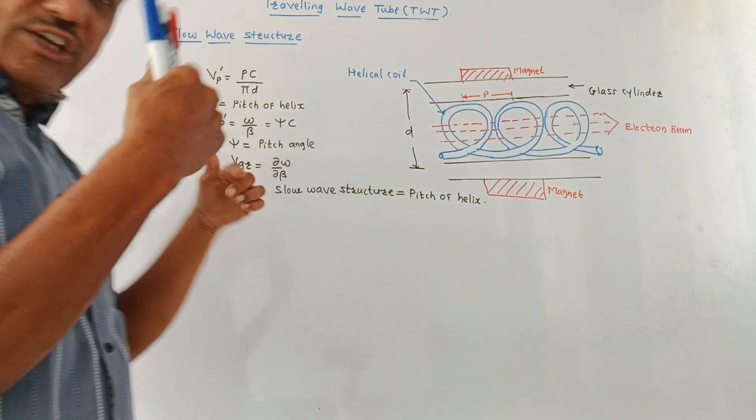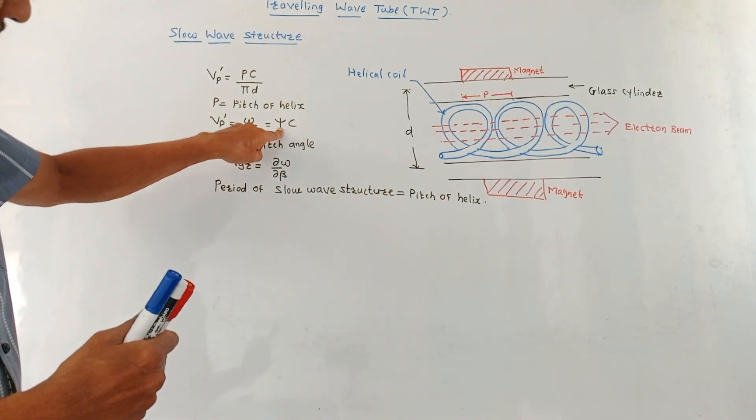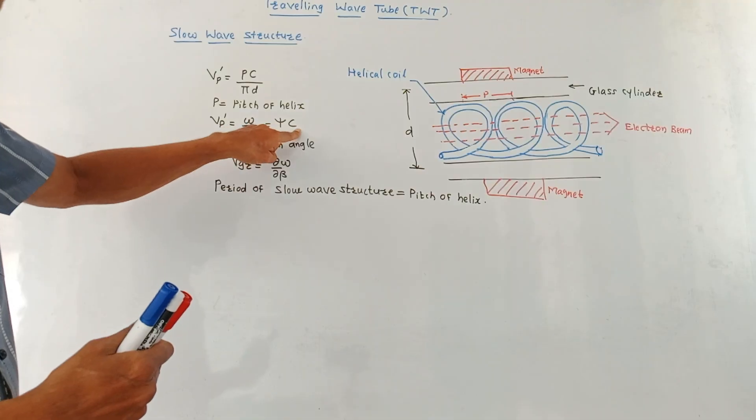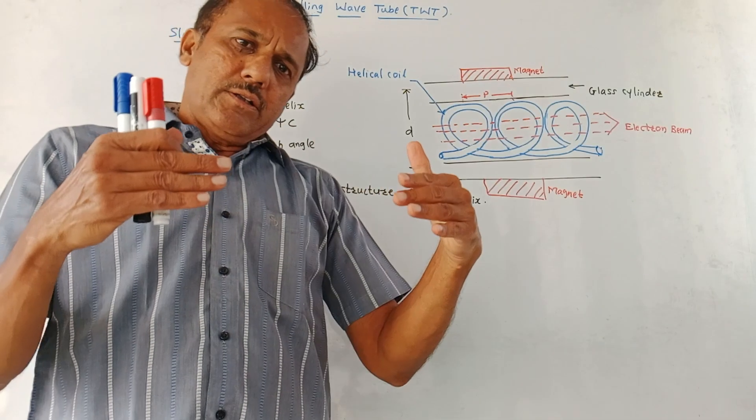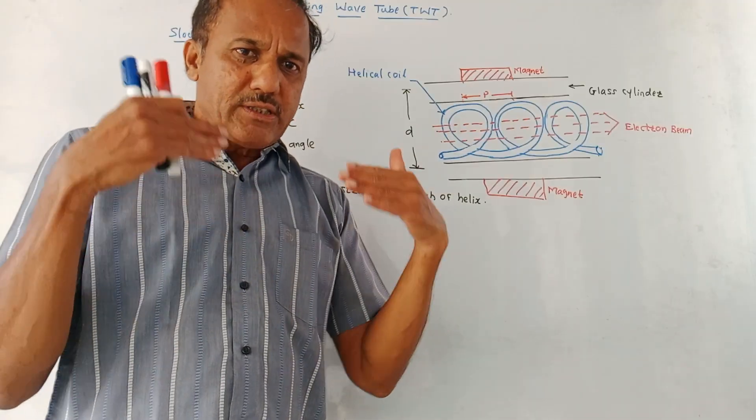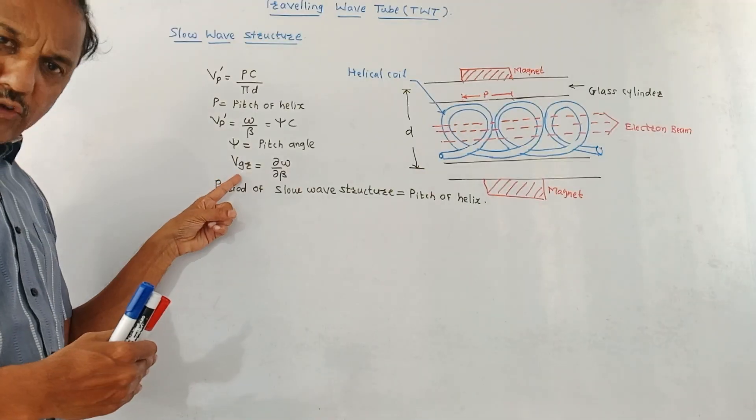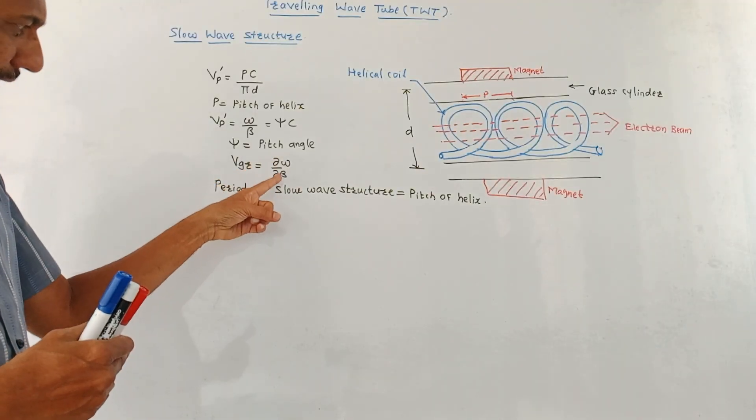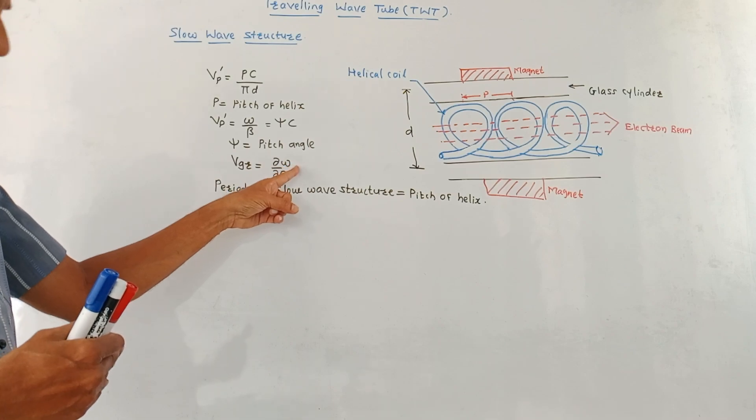The phase velocity is also given by another equation omega upon beta. Beta is the phase shift. Omega is angular frequency. We know it is 2 pi f, which is also given by psi into c. C is the speed of light, psi is the pitch angle.